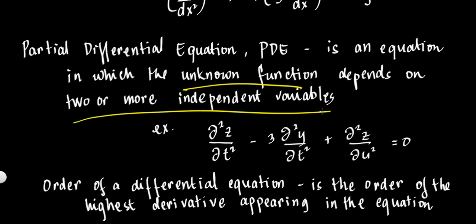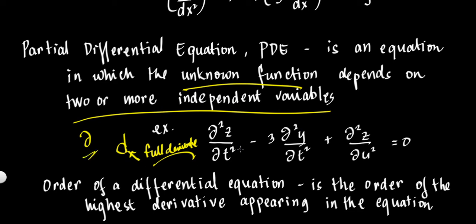The other type is the Partial Differential Equation, or PDE. A PDE is an equation in which the unknown function depends on two or more independent variables — multivariable. For example: the second partial derivative of z with respect to t, minus 3 times the second partial derivative of z with respect to u, equals 0. The partial derivative symbol looks like a curled 'd'. So, 2 or more independent variables are involved.